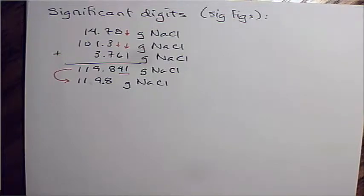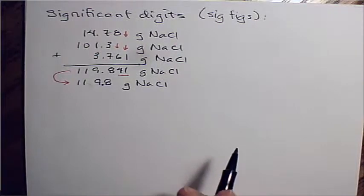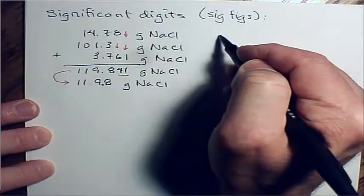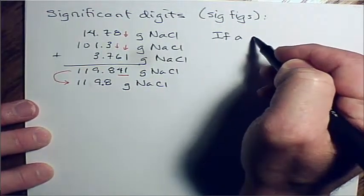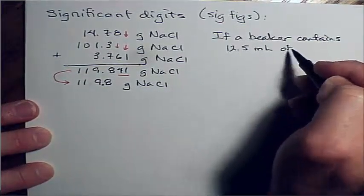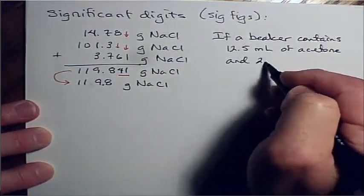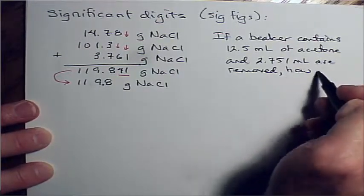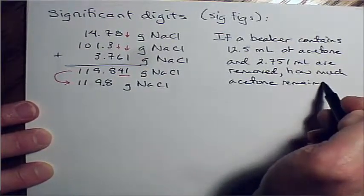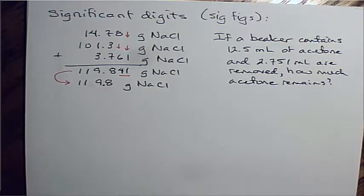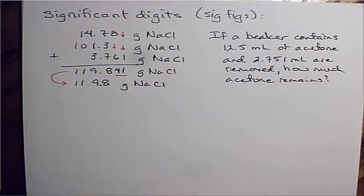The same rule for addition and subtraction applies to subtraction. So I'm going to give you a problem that you solve it. If a beaker contains 12.5 milliliters of acetone and 2.751 milliliters are removed, how much acetone remains? That's your problem.